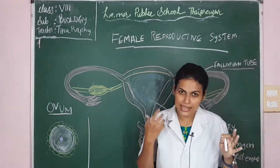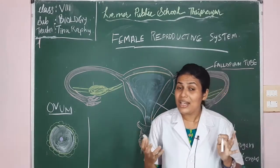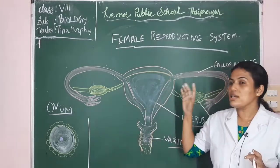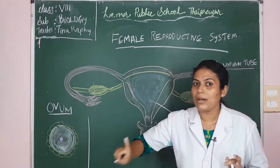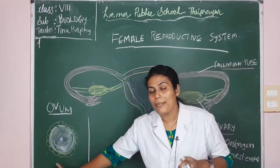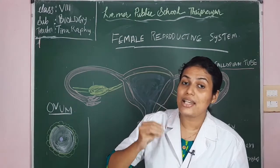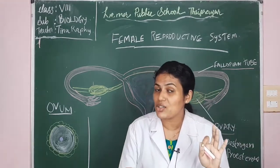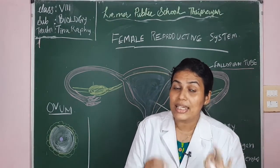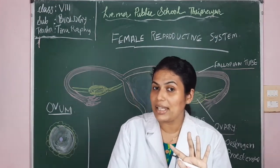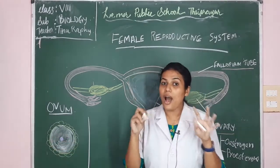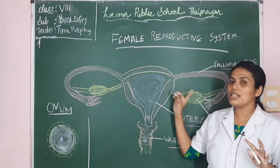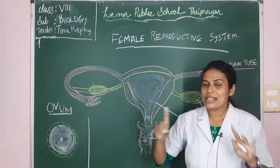Comparing with the male gamete, we know millions of sperms are released at a time, whereas in females only a single ovum is released every month. The size of the ovum is much larger than the size of the sperm. The sperm has a head, middle piece, and tail, whereas the ovum is large and spherical.